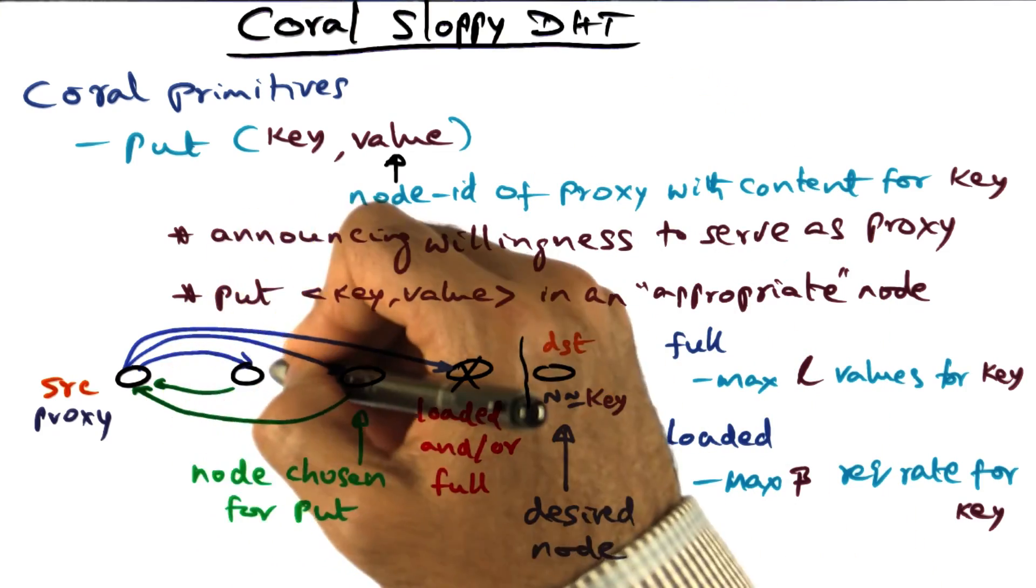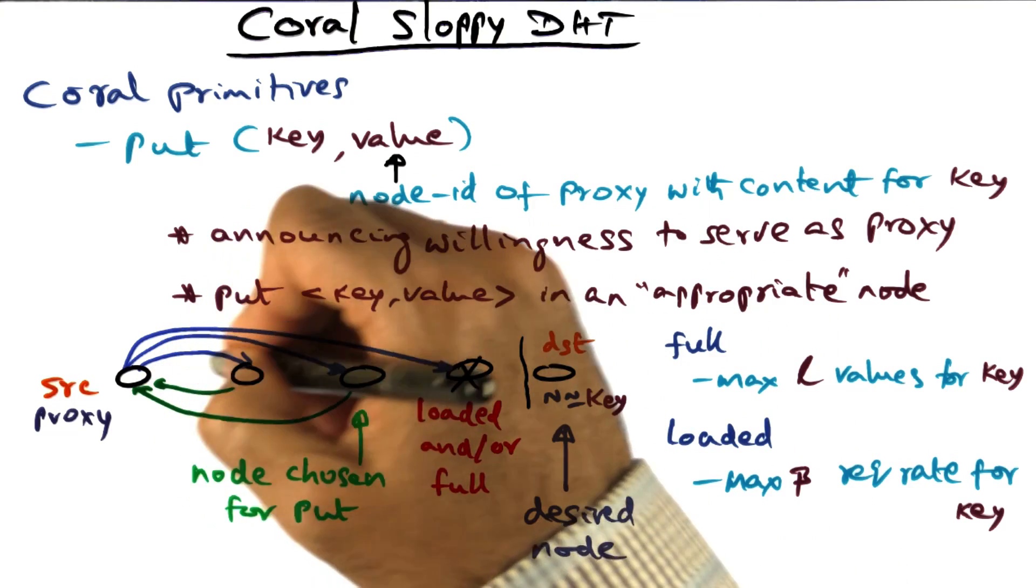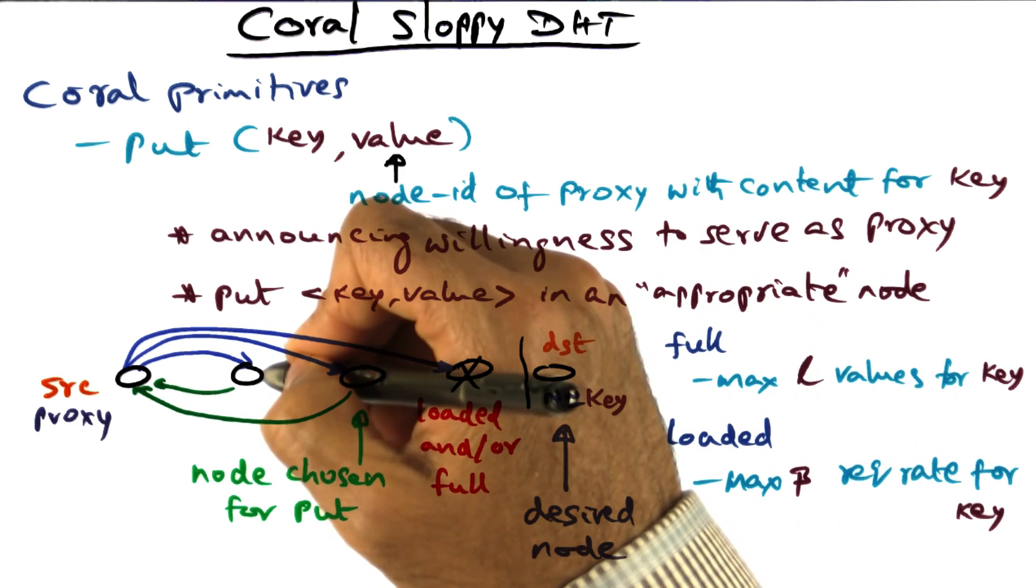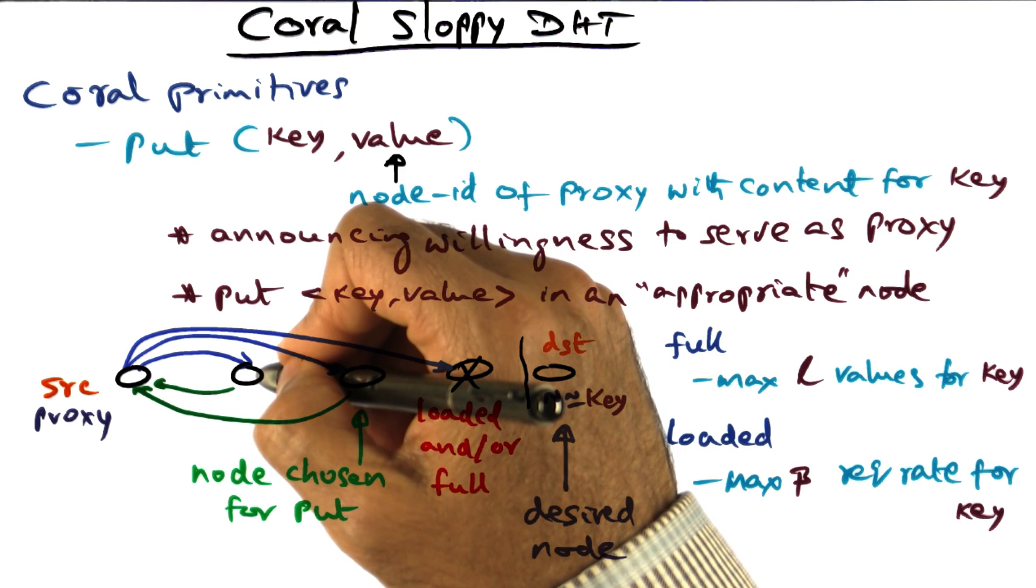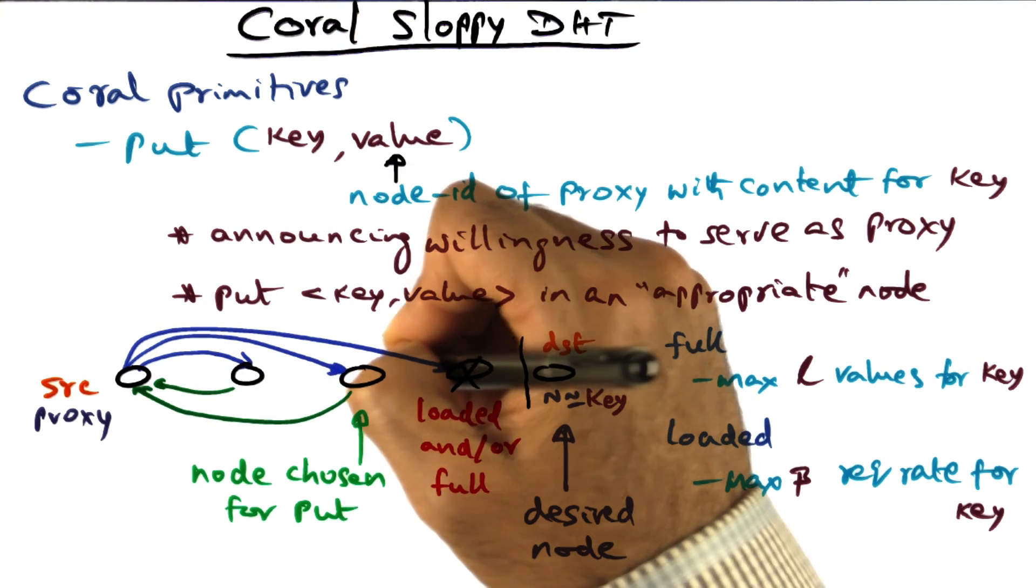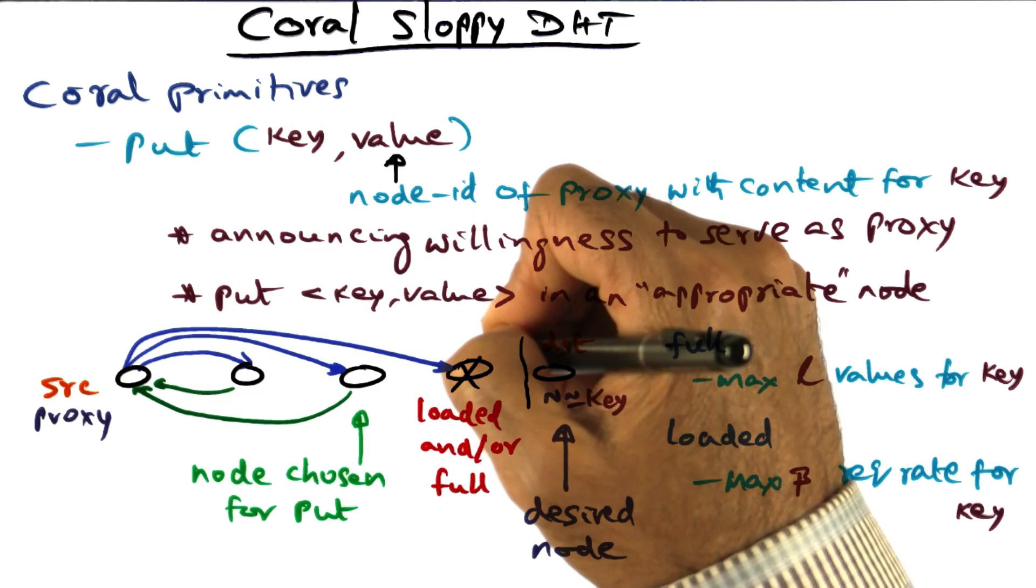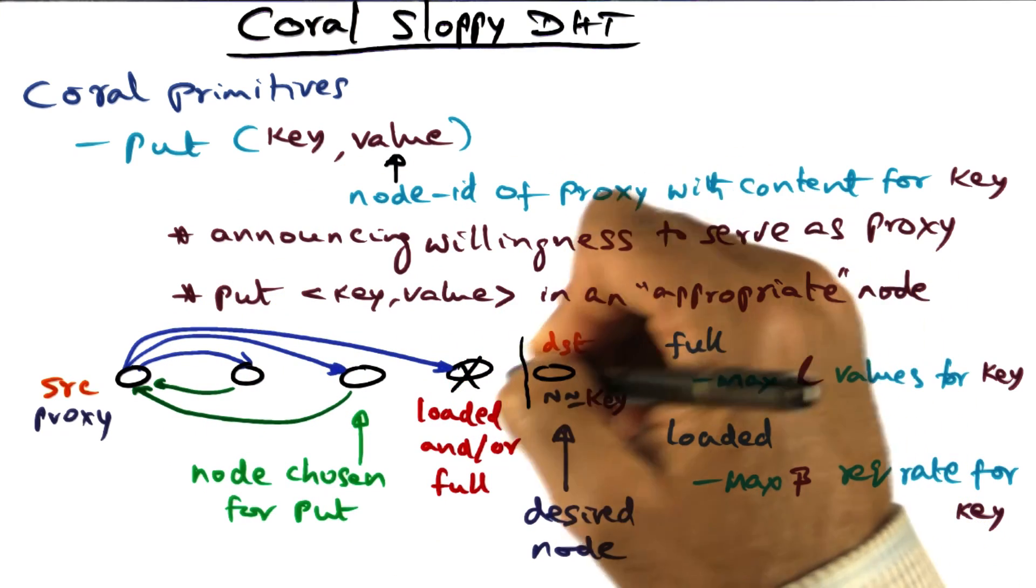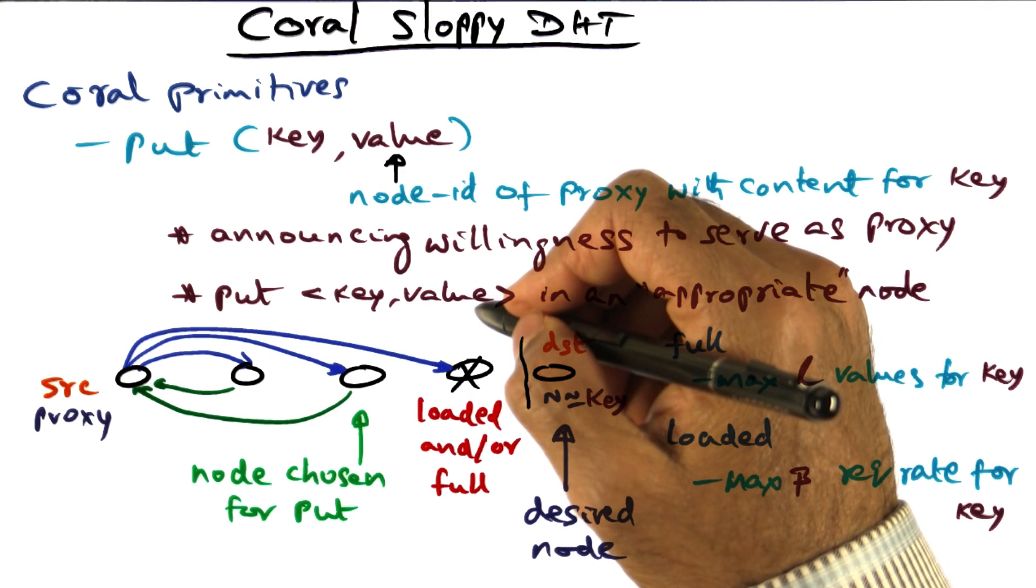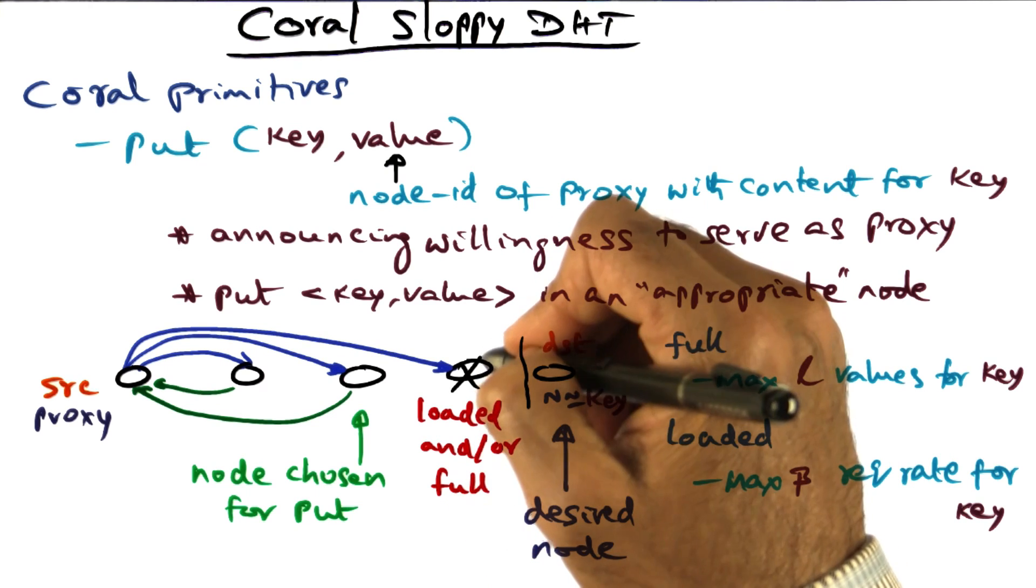The first phase is the forward phase. In the forward phase, what we're doing is we are going to the guy that is half the distance to the desired destination, asking him, are you full or loaded? He says, no, I'm not. Then you go to the next guy who is even closer to the desired destination. He says he's not full or loaded. Then you go to the next guy who is even closer, using that key-based routing algorithm that I described to you earlier. So you keep going till you hit a node that is either loaded or full.